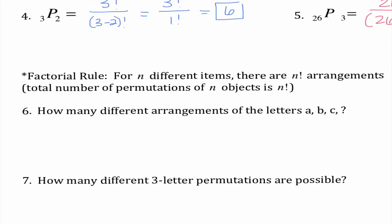The other thing we're going to see is something we call the factorial rule. So if we have n different items there are n factorial arrangements. Okay so for example here number six says how many different arrangements. First of all this fact that it says arrangements signals to me that it is a permutation. It means that the order matters of the letters a, b and c. So I want to show us that there's three different ways. The first way we could do it is 3P3 and that would be like 3 factorial over 3 minus 3 factorial which is 6.